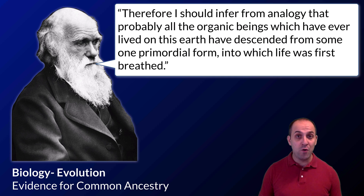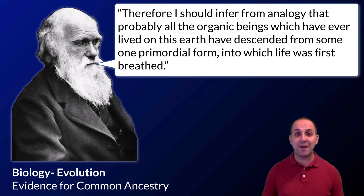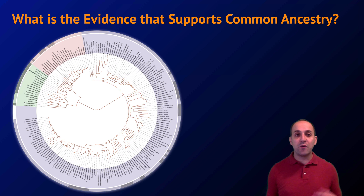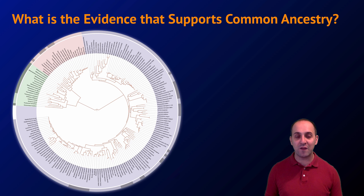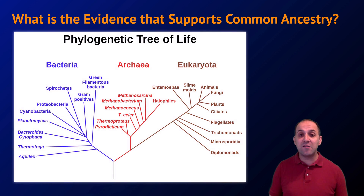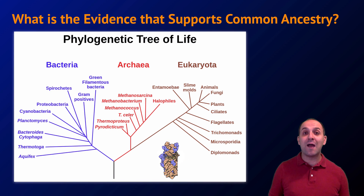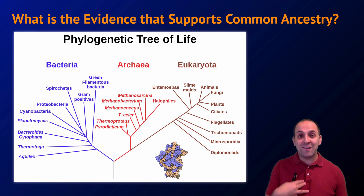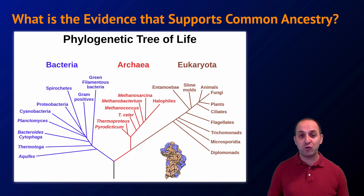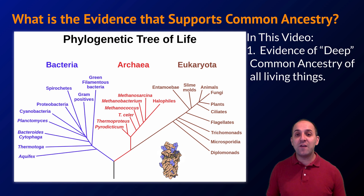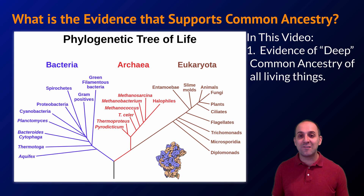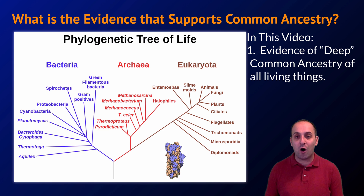That's a profound statement, and like any profound statement in science, we should expect a pile of evidence to support this notion. The question we're trying to answer in this video is: what is the evidence that supports the common ancestry of all living things? How do we know that a phylogenetic tree like this one, based on sequence genome, or this one, based on ribosomal subunit sequences, represents a reasonable interpretation of the evolutionary history of life? In this video, we're going to talk about the evidence that supports deep common ancestry of all living things.